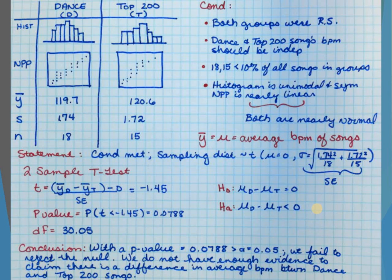Then we look at our less than 10% condition, which with the top 200 — you want to make sure that you're okay with that. Because if I gave you 30 of the top 200 songs, would you be concerned? My sample size was 30 of the top 200 — that's more than 10%. So in a situation where you know you have a limited group, please check that. If you're doing a histogram, the histogram is uniform and symmetric. If you're doing an NPP, you have to state that the NPP is nearly normal. Don't just draw it — comment on it.